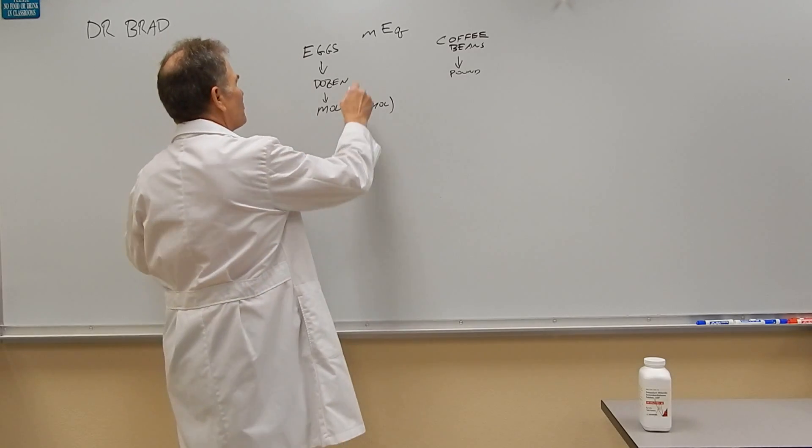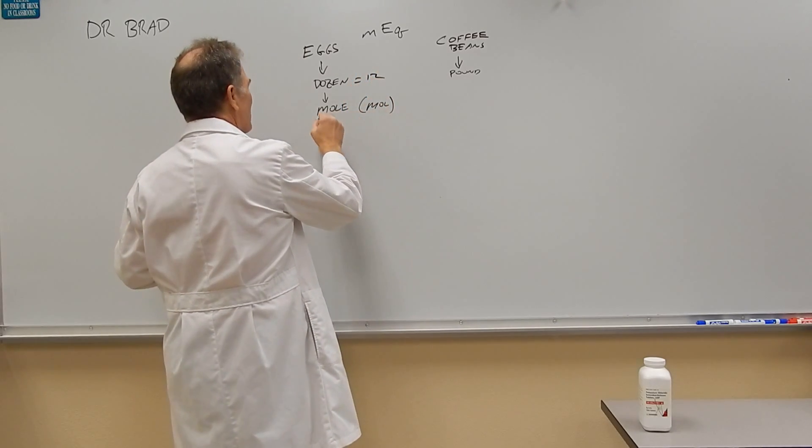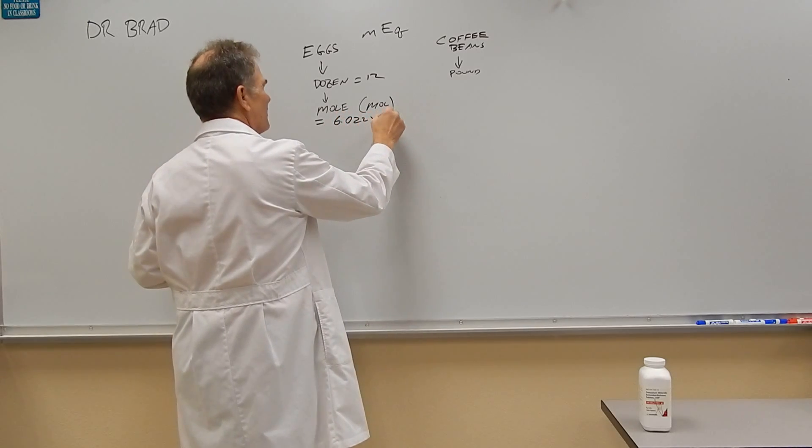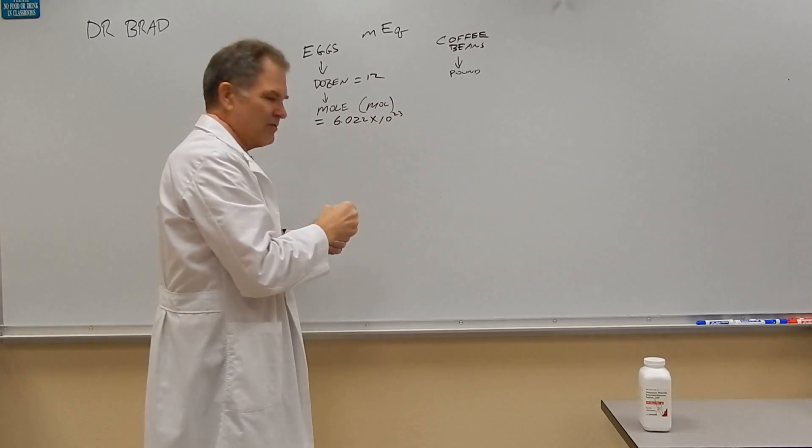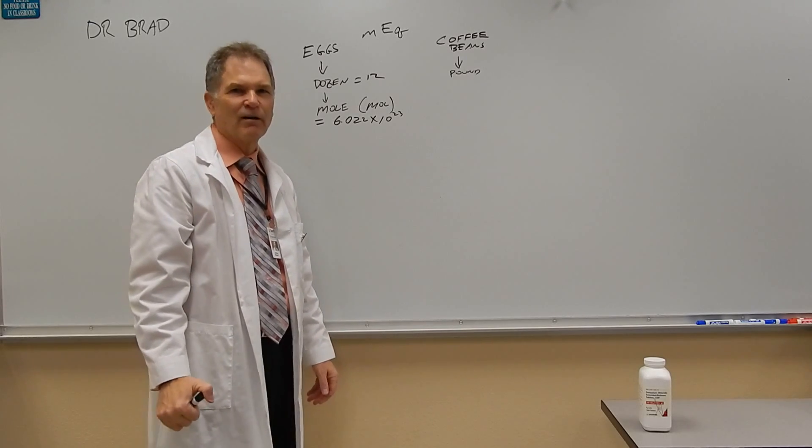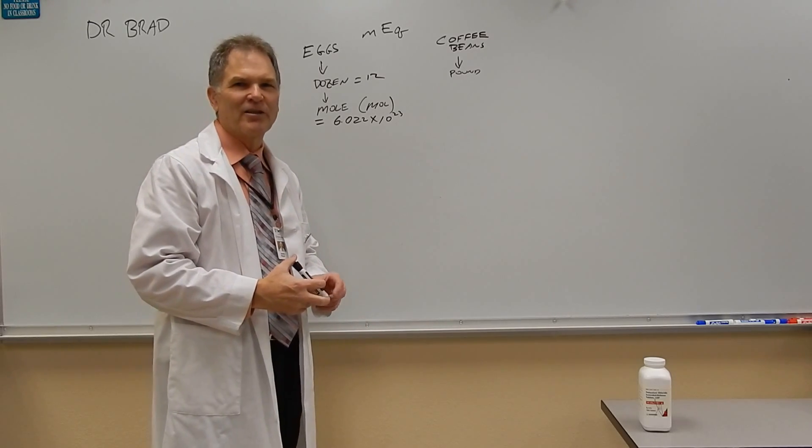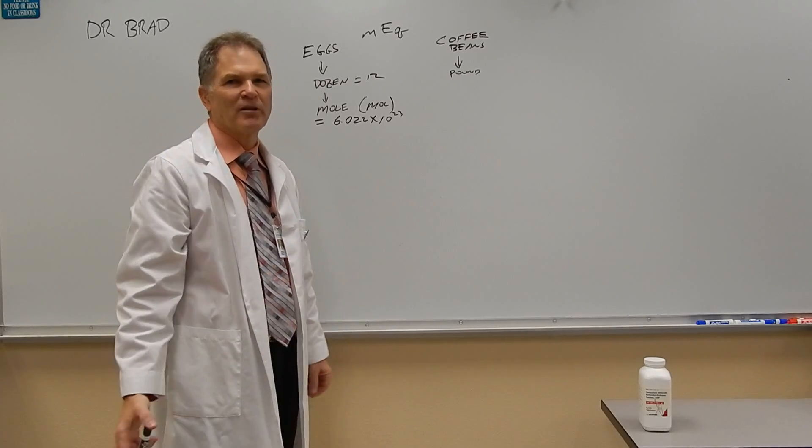A dozen equals 12. A mole is 6.022 times 10 to the 23rd. So that's just a great big number. If you had a mole of sticks of gum, it would cover the United States 40 million times.